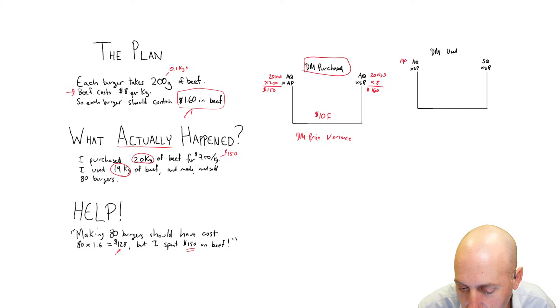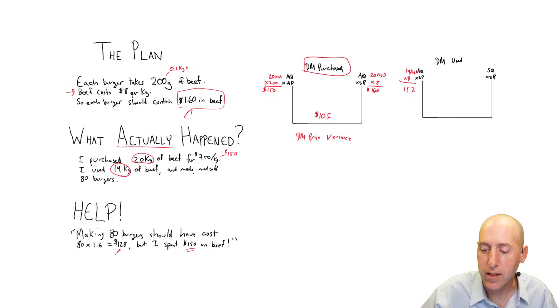He purchased 20 kilograms, but he only used 19 of them. So we take actual quantity used, 19 kilograms times standard price. Actual quantity used was 19 kilograms. The standard price per kilogram is $8. 19 times 8 is $152. So that's that prong.